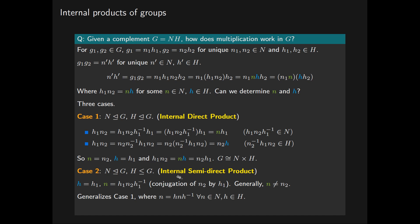When we have an internal semi-direct product of N by H, this is typically written as G equals N followed by this symbol — H. I don't actually know if there's a name for this symbol; to me it looks like a picnic table that's been tipped over. The important thing to note is that you always write the normal subgroup on the side of this symbol that doesn't have the vertical line. So N is the normal subgroup in this case and H is the other subgroup.